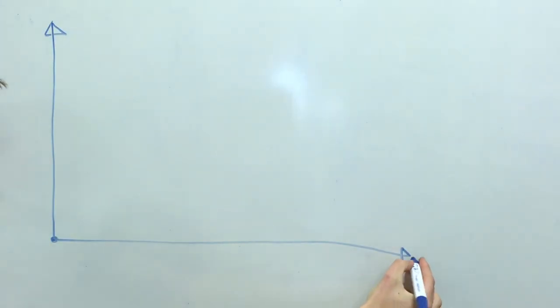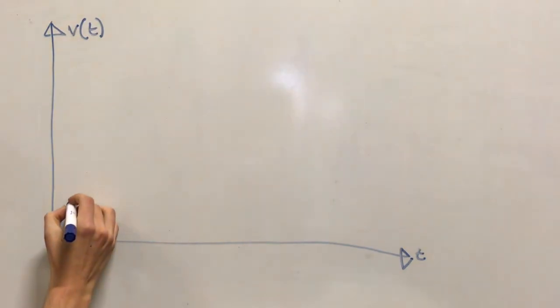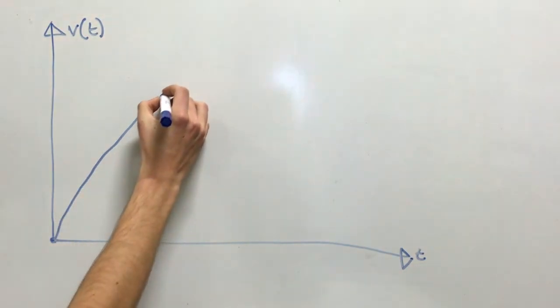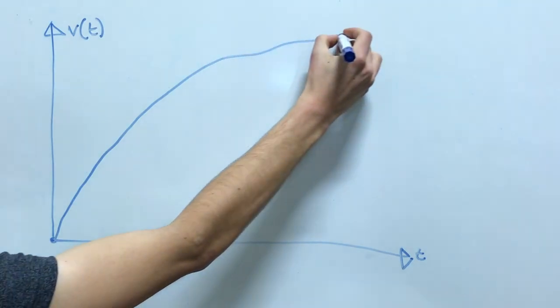This can be shown using a graph of speed against time where eventually the speed will level out when there is no longer any resulting force acting on the object.